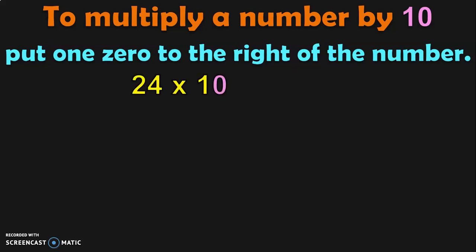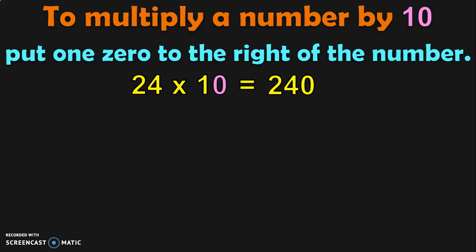First, 24 into 10 is equal to... what should we do? We should put one zero to the right of the number. The number here is 24 and I am going to add a zero to the right of that number. What does it make? 240. So, 24 into 10 will give you 240.